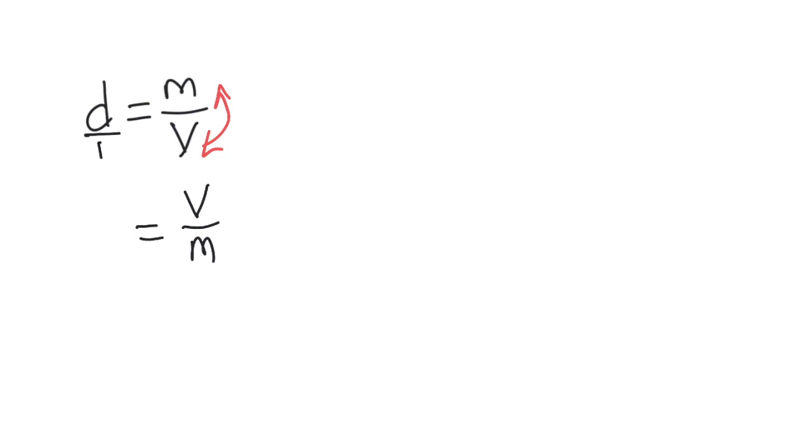Since the d was by itself, it's kind of like it was in a fraction over 1, so when I flip it, it's just 1 over d. Now I'll multiply both sides by m to cancel m on this side, and then put the m on the top on this side. So the equation becomes v equals m over d.